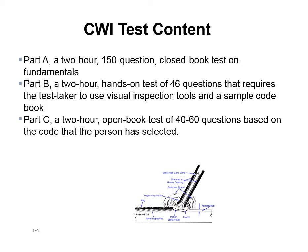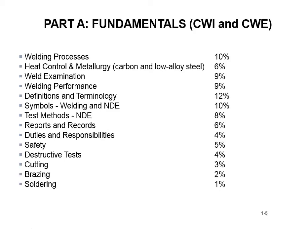Part A of the CWI exam covers: welding processes at 10%, heat control and metallurgy, weld examination, welding performance, and definitions and terminology at 12% — that's the biggest portion. If you can speak the lingo and get points there, that's a great start. Symbols — welding and NDE — are 10%; you need to know how to read weld symbols.